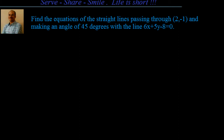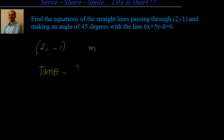So how to find out the equation of those straight lines? We know that to find out the equation of a straight line, we need a point and slope. We have the point here — the line is passing through (2, -1). The problem is I don't have the slope, so let the slope be m. We know this line is making an angle of 45 degrees with the line 6x + 5y - 8 = 0. We also know that the angle between two lines is given by tan θ = (m1 - m2) / (1 + m1·m2), where m1 and m2 are the slopes of the straight lines.